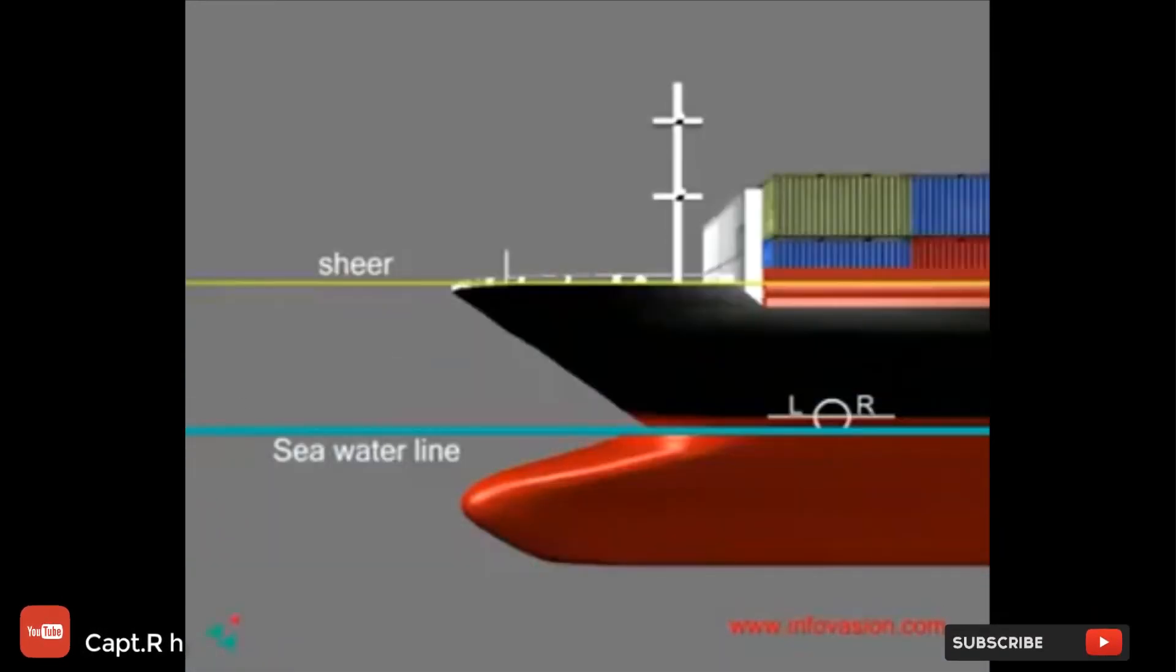Plimsoll line allows one to know the freeboard. Freeboard is the vertical distance between the water line and the shear of the ship where water can enter the vessel.